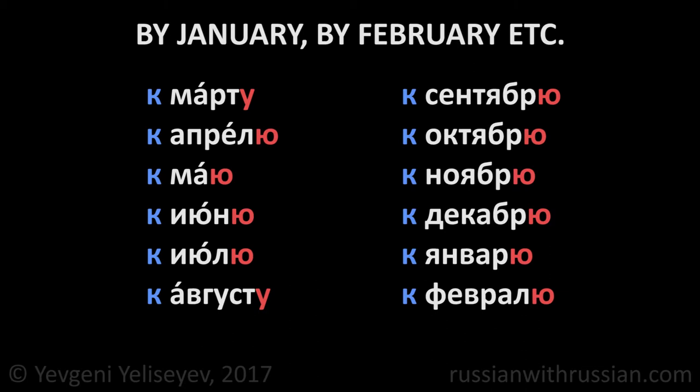The names of autumn and winter months are stressed on the ending. К сентябрю – by September, к октябрю – by October, к ноябрю, к декабрю, к январю, к февралю.